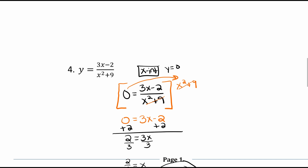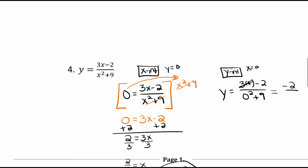Now for the y-intercept, set x equal to zero: y equals (3 times 0 minus 2) / (0 squared + 9). At the top, 3 times 0 is 0, leaving only negative 2. At the bottom, 0 squared is 0, leaving just 9. So y equals negative 2 over 9. That fraction can't be reduced, so the y-intercept is (0, −2/9).